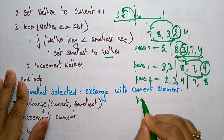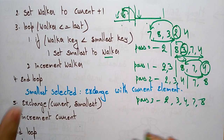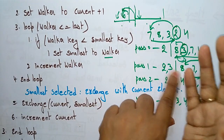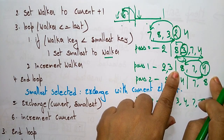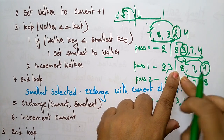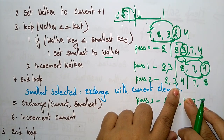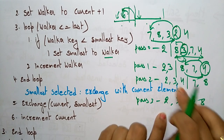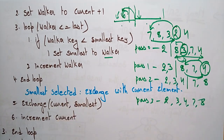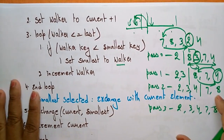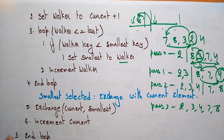Coming to pass 2: the smallest element is 4, exchange with the starting of the unsorted list. Now 2, 3, 4 are the sorted portion and 7, 8 are the remaining elements. In pass 3, the sorted list becomes 2, 3, 4, 7, 8. The walker moves to current plus one, checking walker less than or equal to last, comparing walker key to smallest key, updating smallest to walker, shifting to sorted array, and incrementing the walker. This is the algorithm for selection sort.